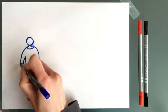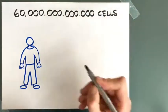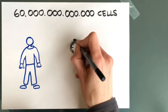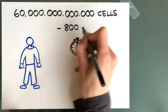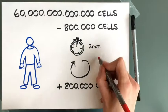The human body is made up of about 60 trillion cells. During this two-minute movie, about 800,000 cells in your bodies will die, but luckily they will be replaced by mitotic cell divisions.